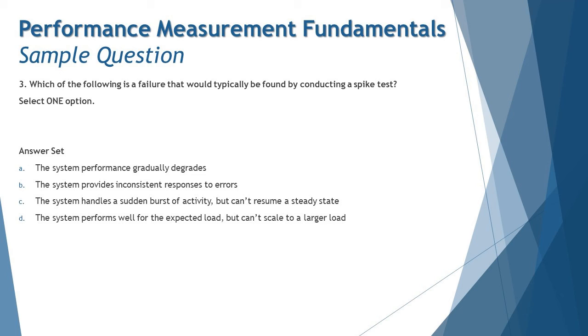Option B: the system provides inconsistent responses to the errors. This is not correct because this is an example of resource degradation over time but has nothing to do with the sudden increment of users.